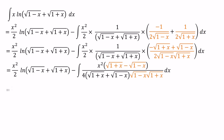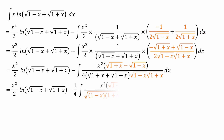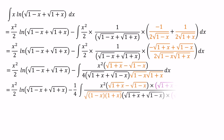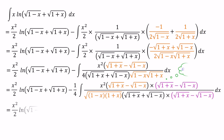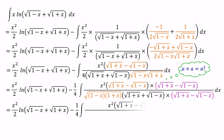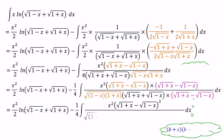The denominator value 4 is a constant, so we can bring 1/4 outside of the integral. After that, we can multiply both numerator and denominator by the conjugate of (√(1+x) + √(1-x)). Then in the numerator we have (√(1+x) - √(1-x)) perfect squared, and in the denominator the difference of two squares.